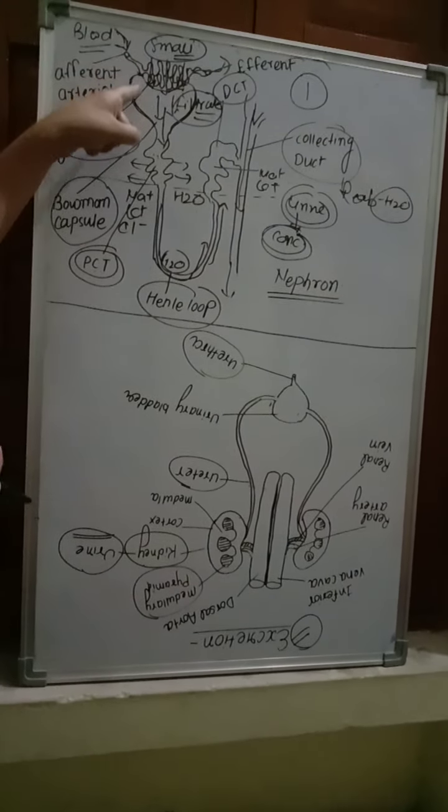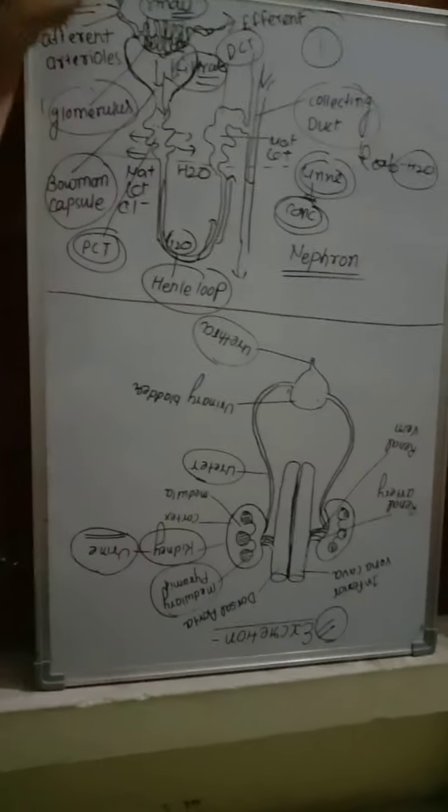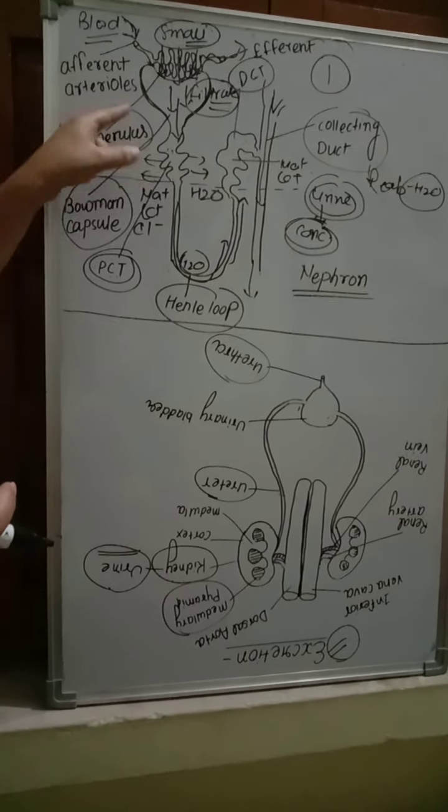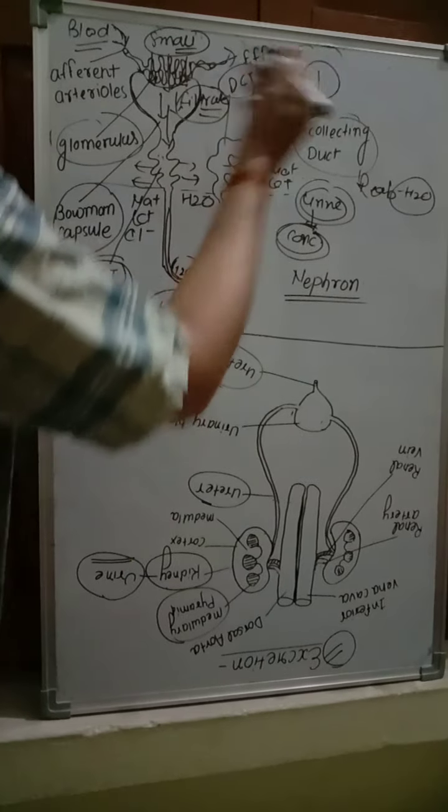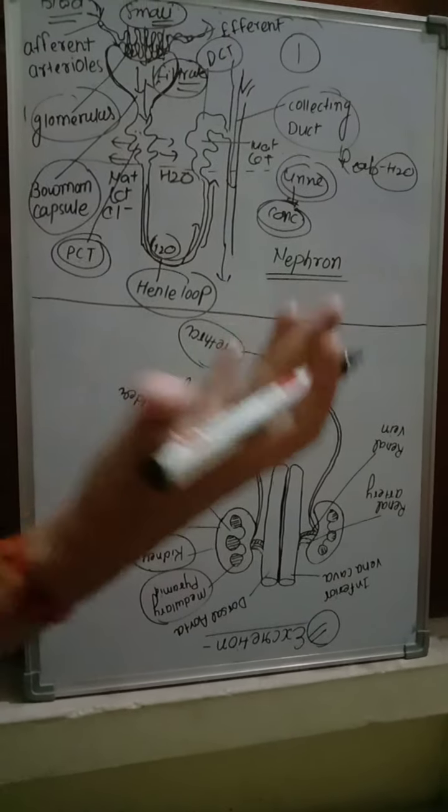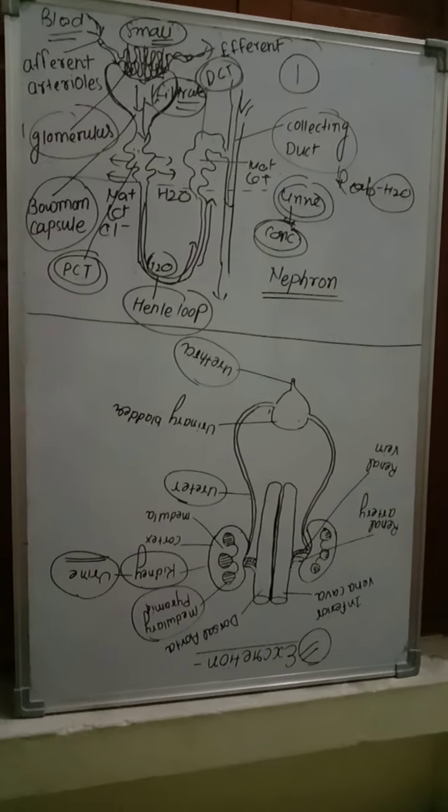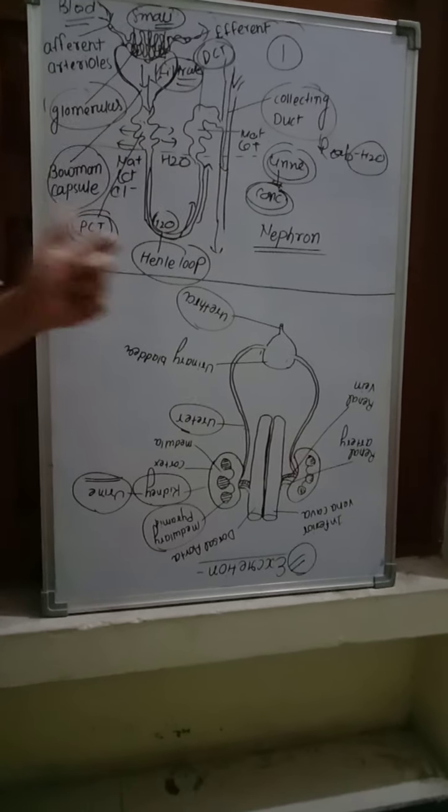That has three steps. First step, glomerular filtration or blood filtration, that takes place in glomerulus. Second step is reabsorption of substances that takes place in different PCT and Henle loop. And third step is selective secretion that takes place in DCT part. These three processes help in the formation of urine, and that is very important.